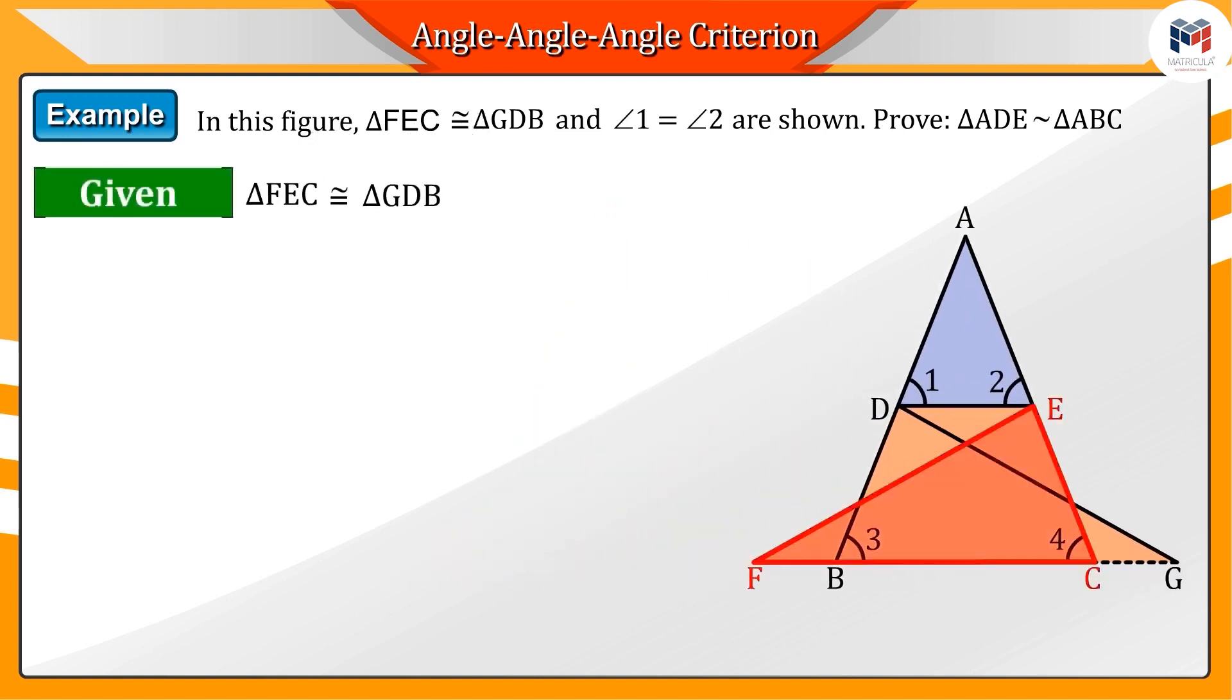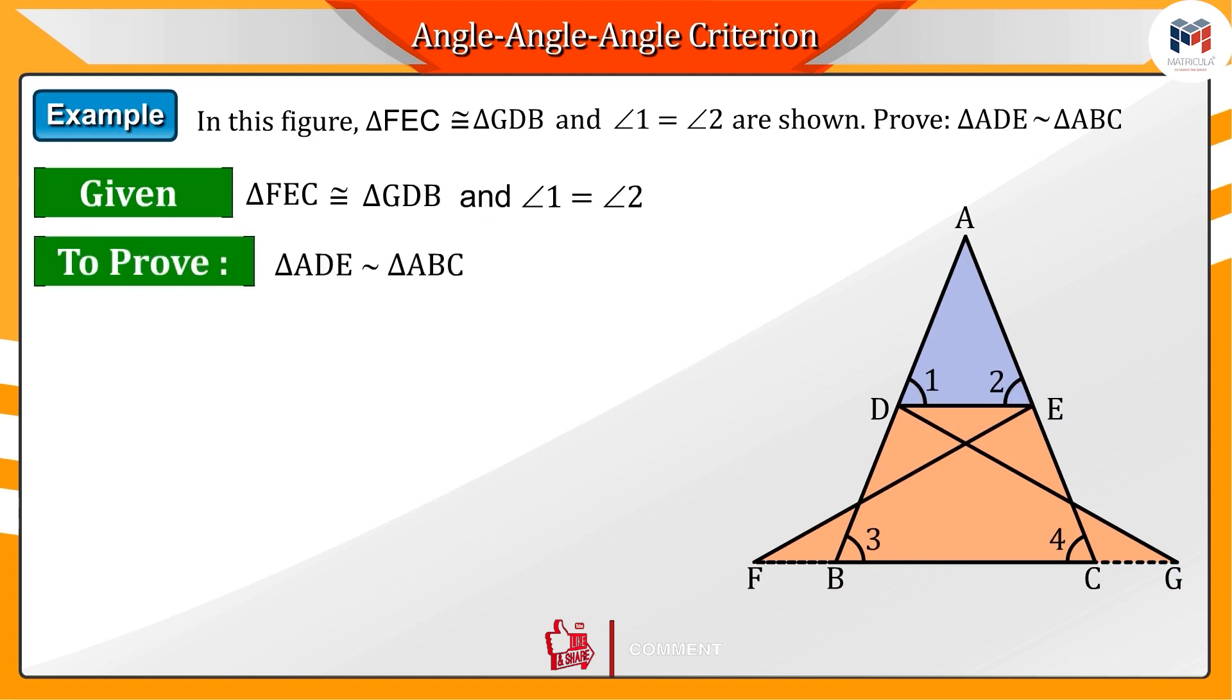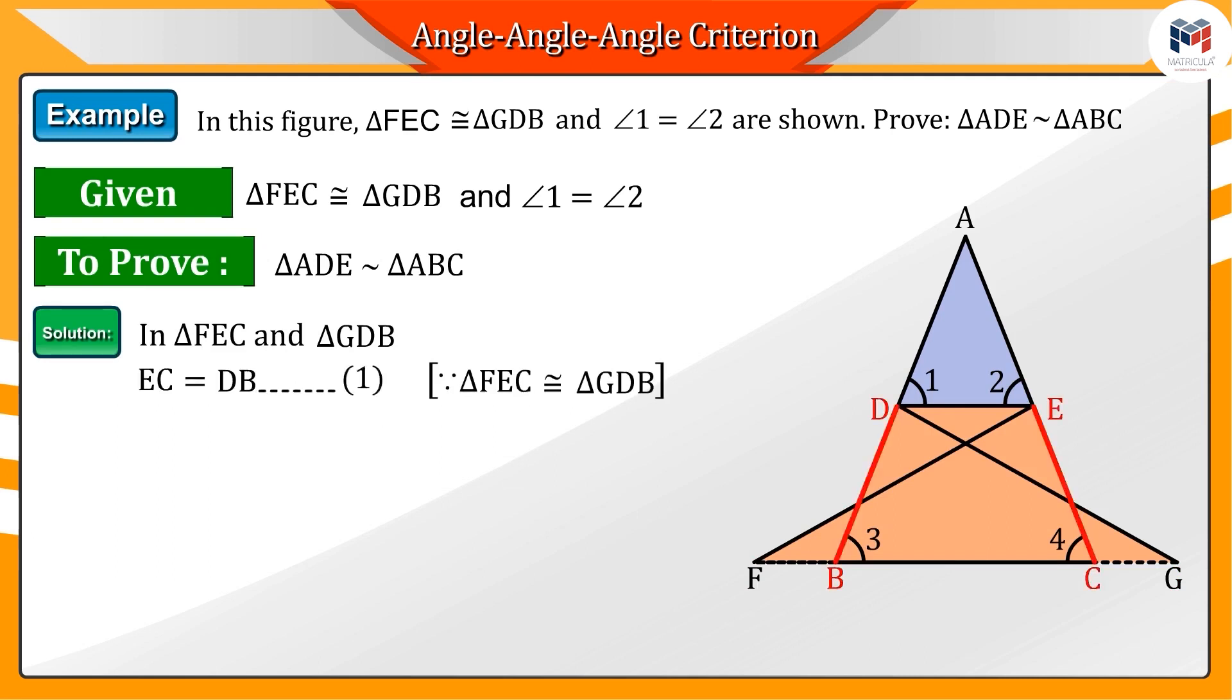From the question, we know that triangles FEC and GDB are congruent and angles 1 and 2 are equal. Because triangles FEC and GDB are congruent, we know that corresponding sides of congruent triangles are equal, by which we get equation 1.